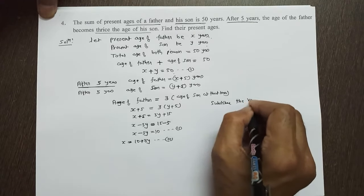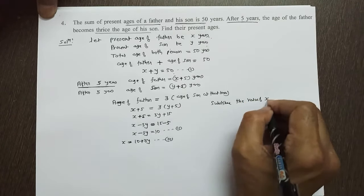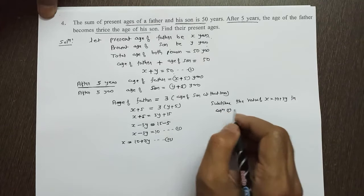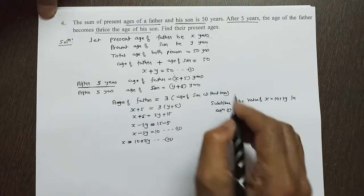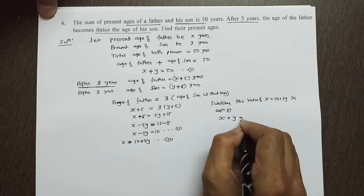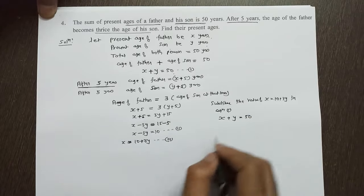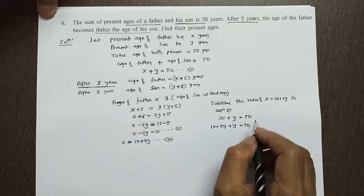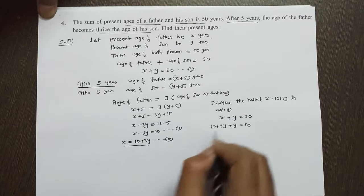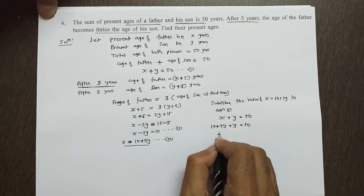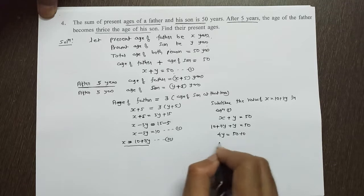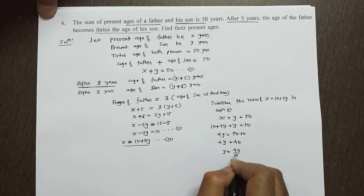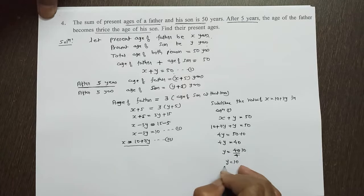The value of X equal to 10 plus 3Y. In equation 1, putting the value of X, we get 10 plus 3Y plus Y equal to 50. This gives us 4Y equal to 50 minus 10. 4Y equal to 40. Y equal to 40 upon 4 means 10. Y equal to 10.